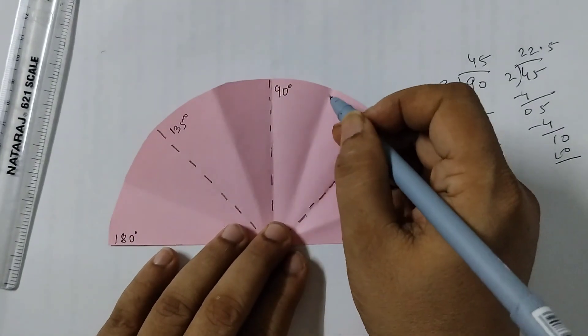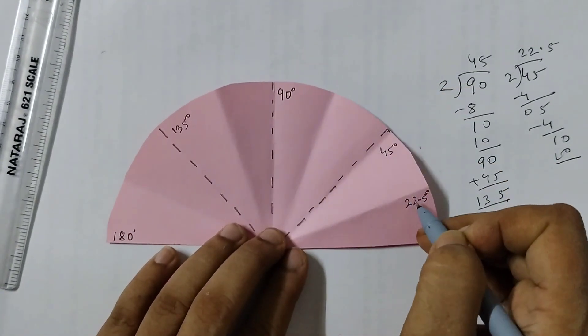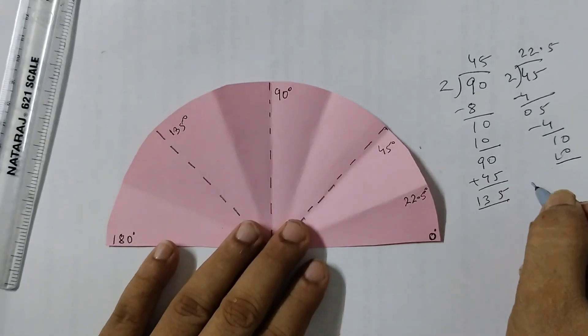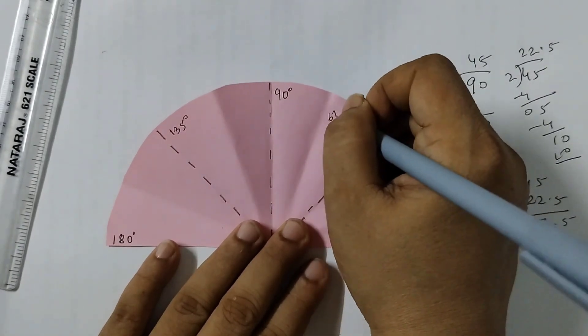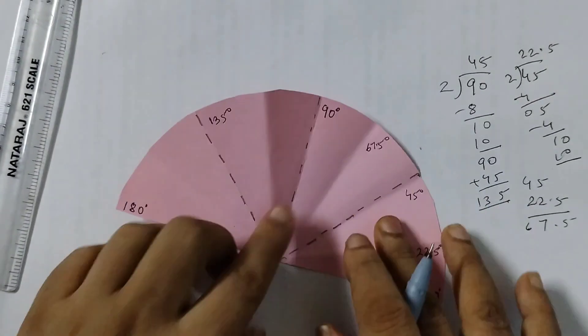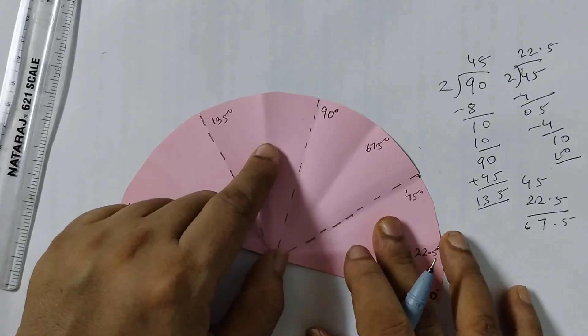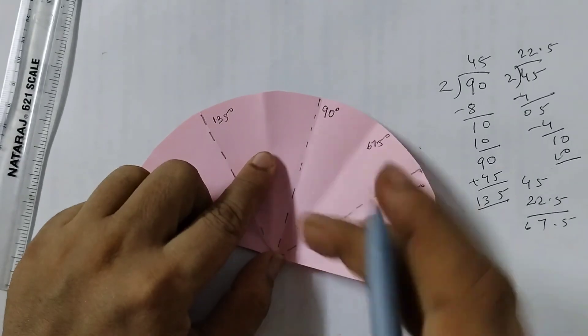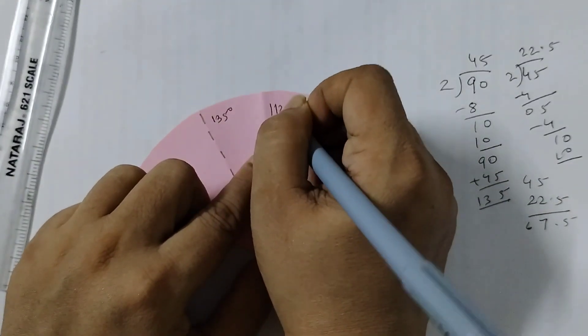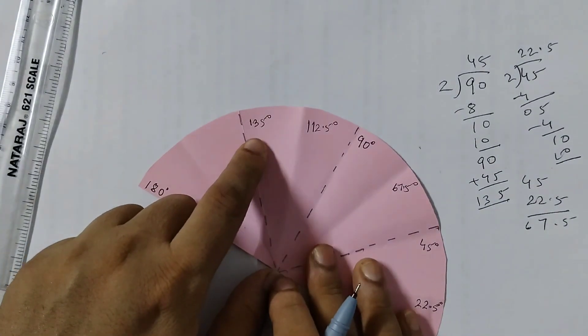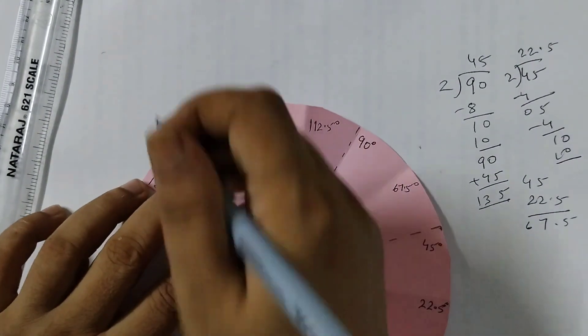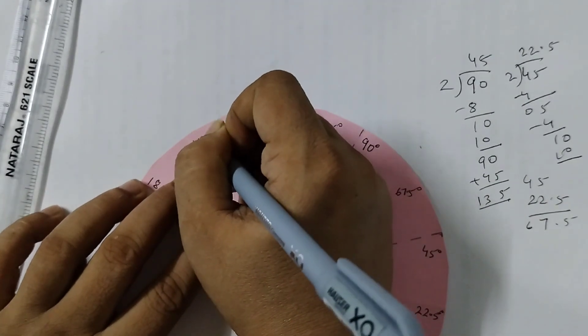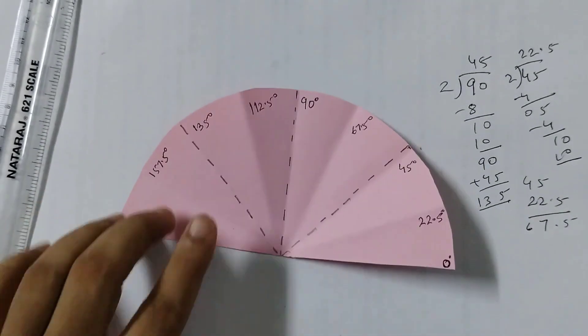So now to find out this angle here, add 22.5 degrees to 45. So 45 plus 22.5 is 67.5 degrees. Now 90 plus 22.5 will give you 112.5 degrees. 135 plus 22.5 will give you 157.5 degrees.